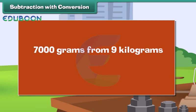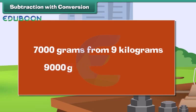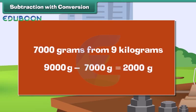In a subtraction example, 9 kg is equal to 9000 grams. 9 kg minus 7000 grams equals 2000 grams.